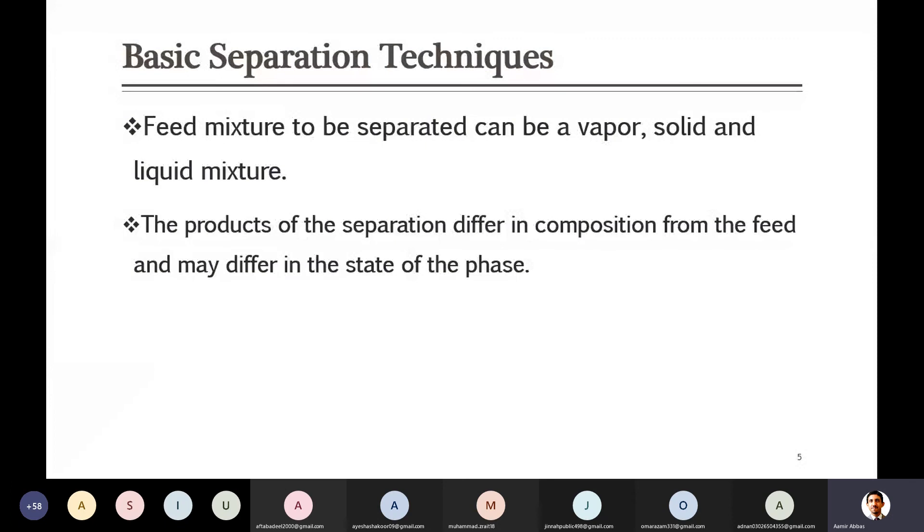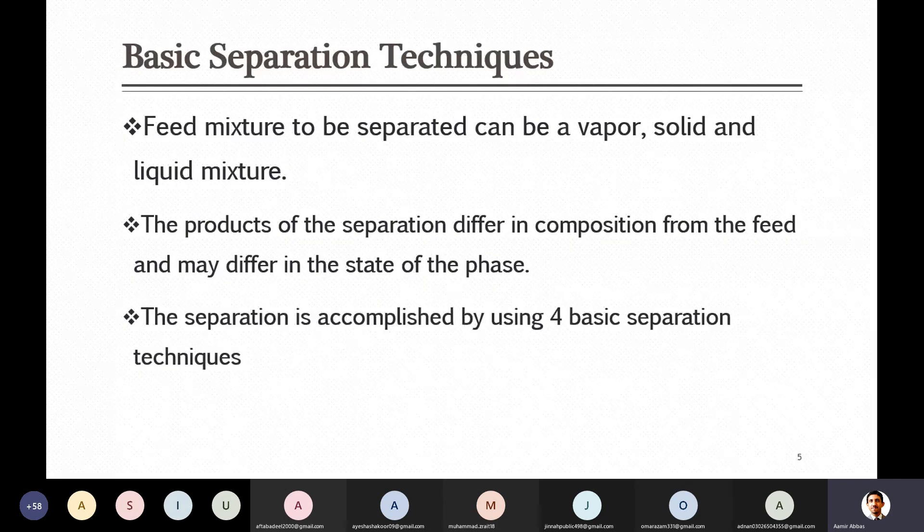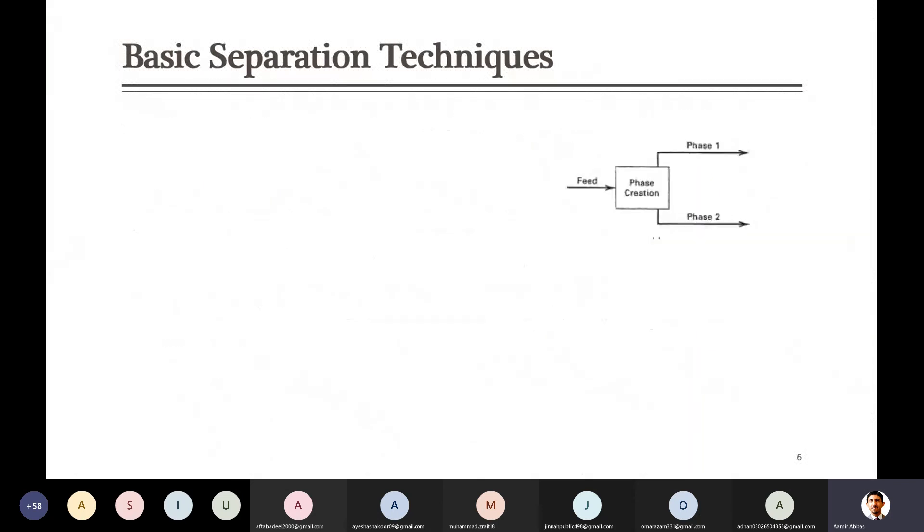Whenever you will take these products of separation, they will definitely differ in the composition from the feed. As we said, there is air which is a mixture of gases, and when we get it separated, when we get oxygen, definitely that has different properties compared to the nitrogen that will be separated. So separation can be accomplished by using four basic separation techniques. And what are those techniques?